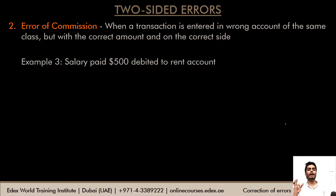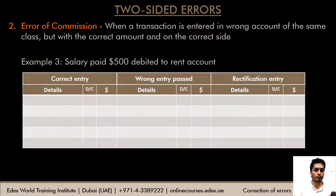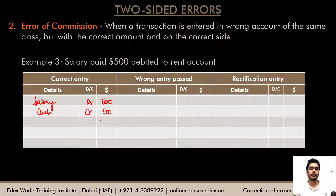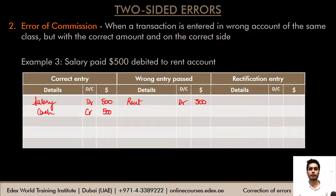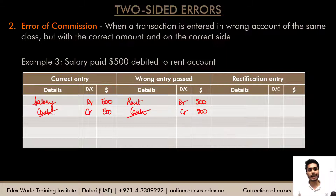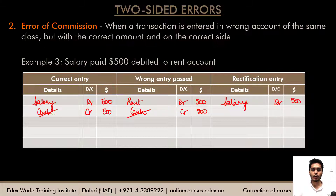Another example of error of commission: salary paid $500 was debited to rent account. The correct entry is: salary debit $500, cash/bank credit. The wrong entry passed has rent debit $500; the credit side is assumed correct. To rectify: debit salary $500 and credit rent $500. This reverses the incorrect debit to rent and gives effect to the correct debit to salary.